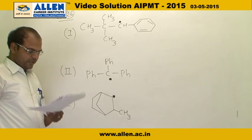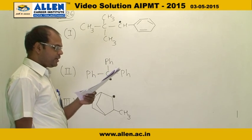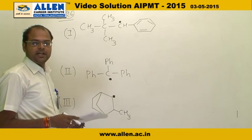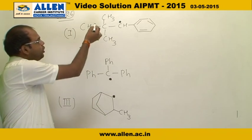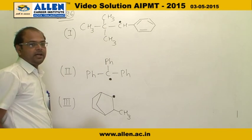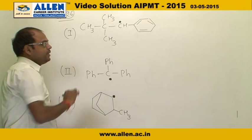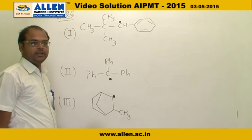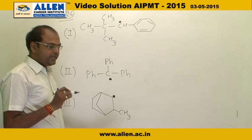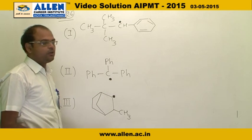These compounds are given and the question is: hyperconjugation occurs in which? Hyperconjugation needs alpha hydrogen and these are all radical species. Carbon radical stability according to hyperconjugation requires at least one alpha hydrogen.